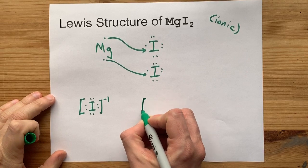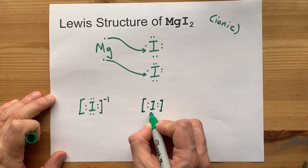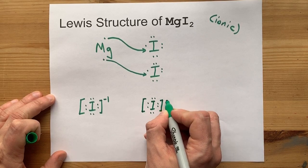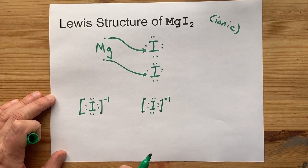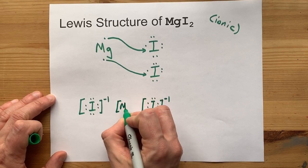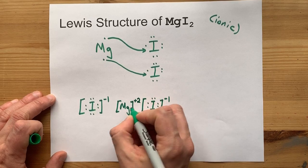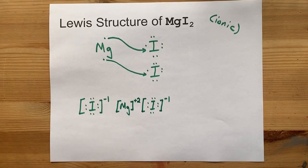And you're going to need to draw it twice because there are two iodines needed to absorb all the electrons that magnesium was giving away.